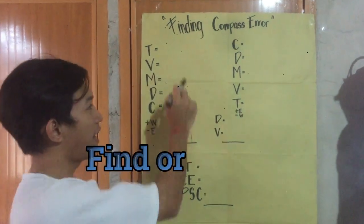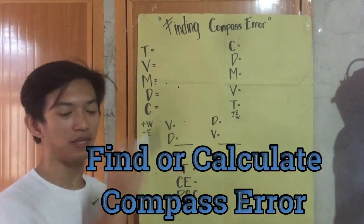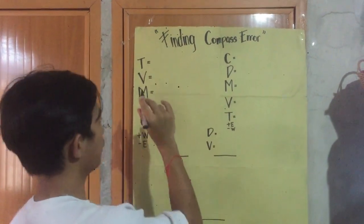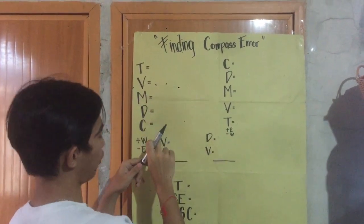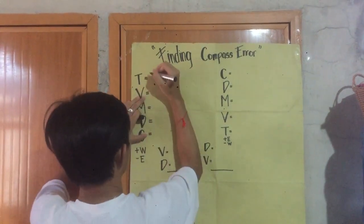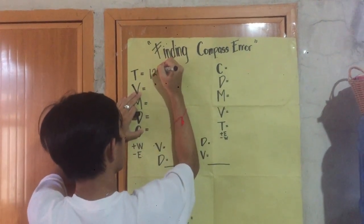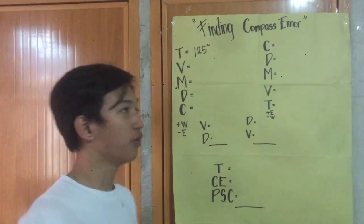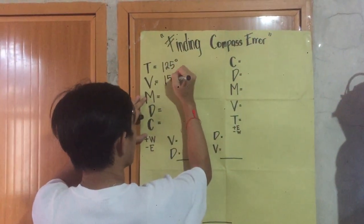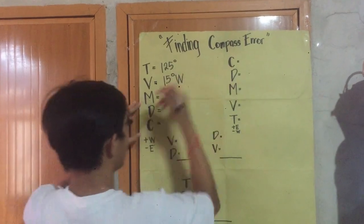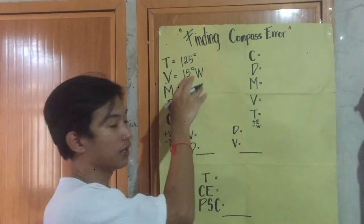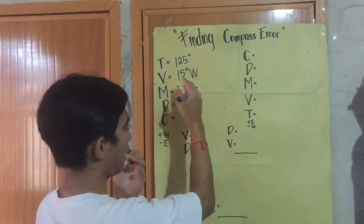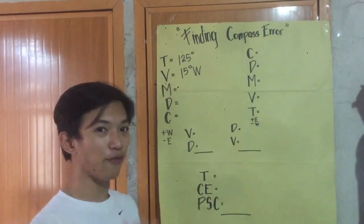Today we're going to find or calculate the compass error. So if we have a true course of 125 degrees and a variation of 15 degrees West, we know that if we're going west we're going to add it, so we will have 140 degrees magnetic.